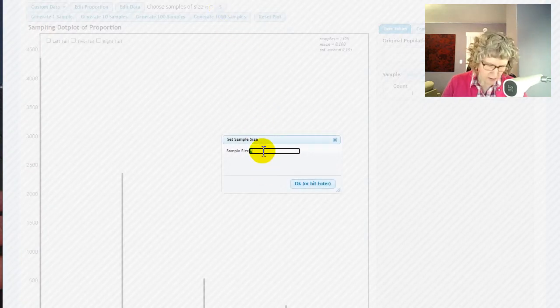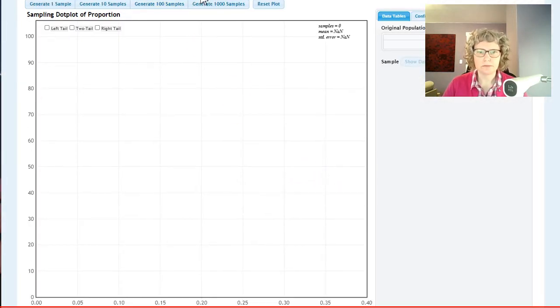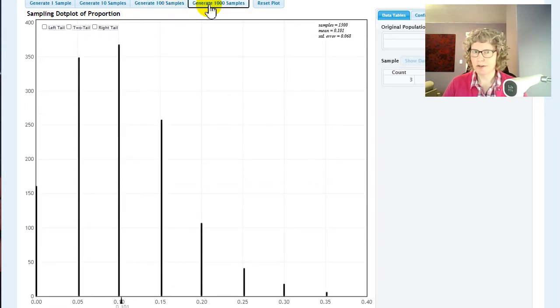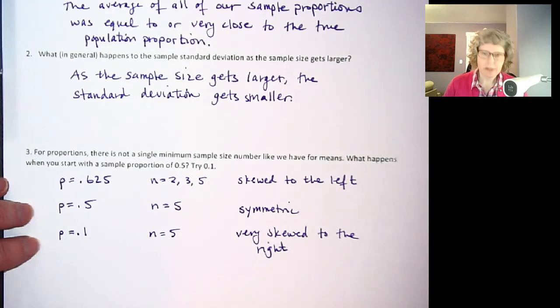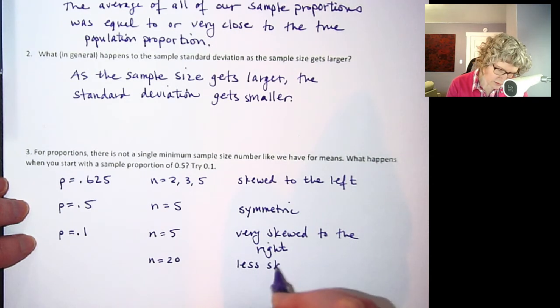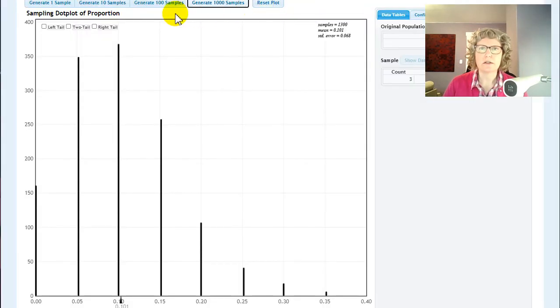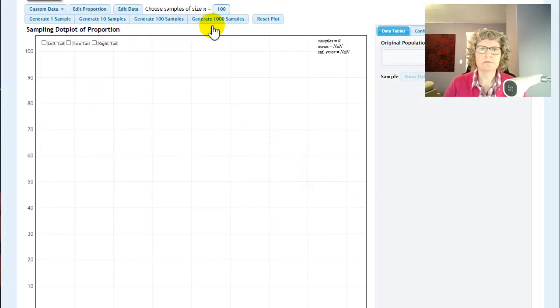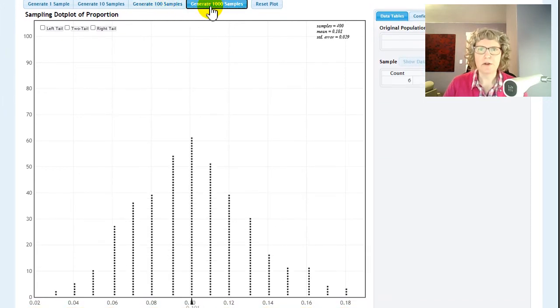So let me try 0.1, let me try 20. Okay see how that's getting closer to symmetric, but not symmetric yet. So let me just summarize that. N equals 20, it's less skewed. Let's try 100. Do sample size 100. Okay there we go. That looks much better doesn't it?